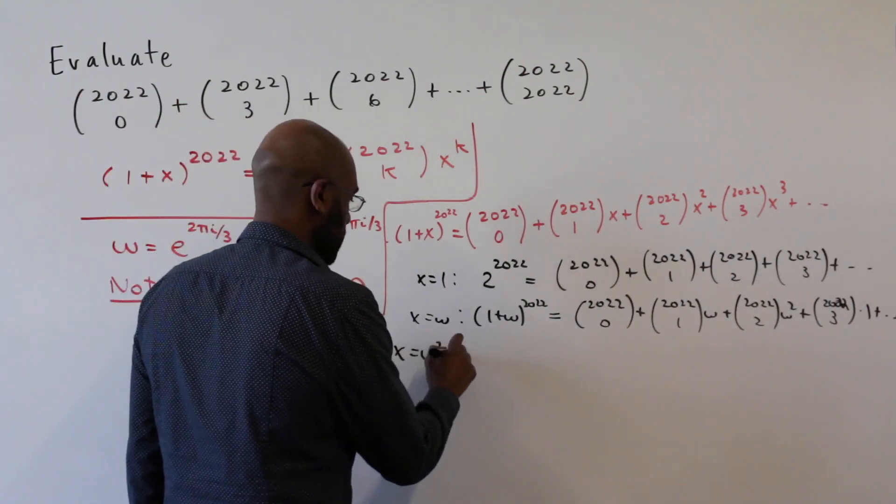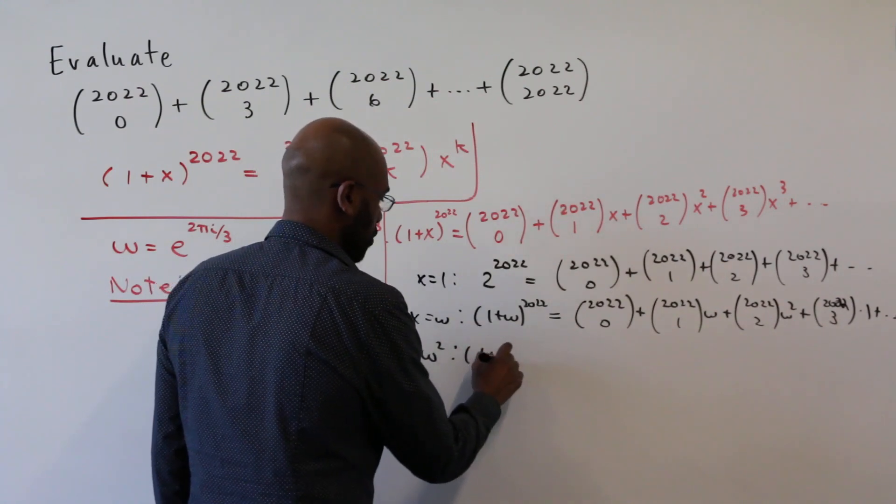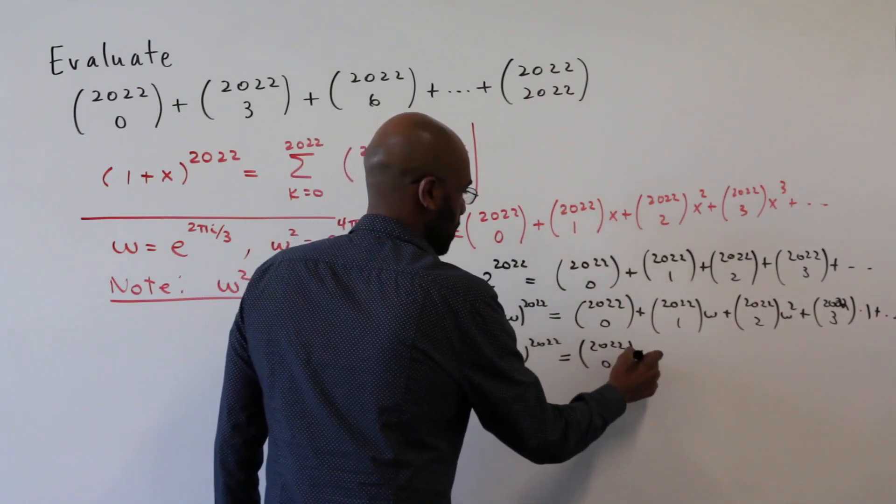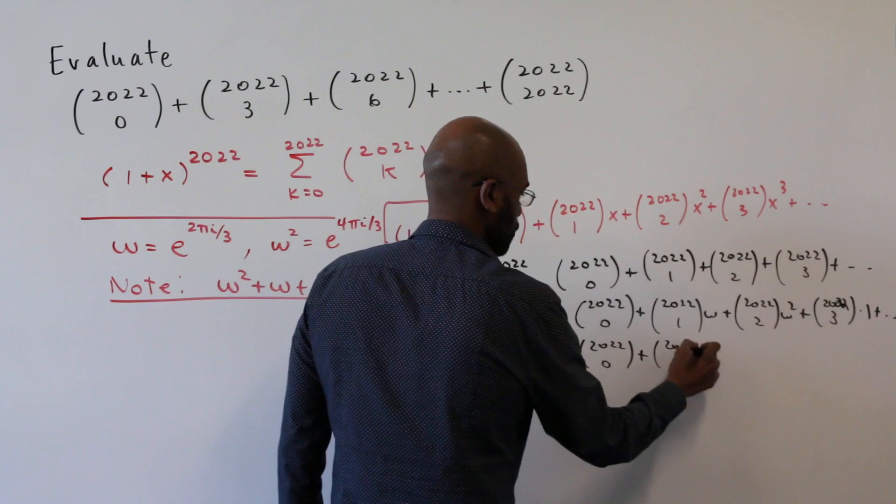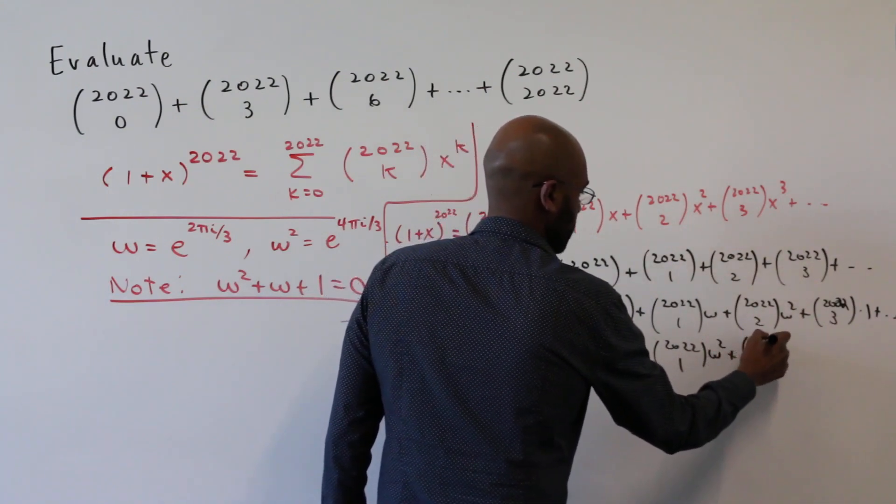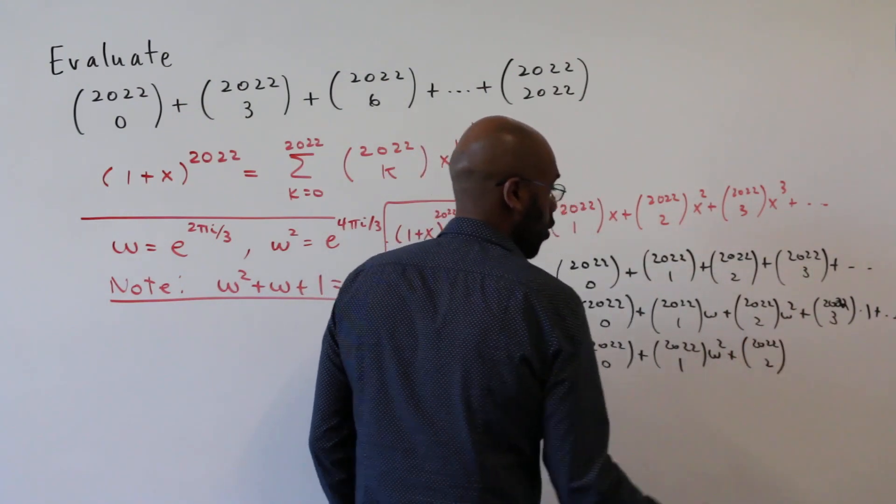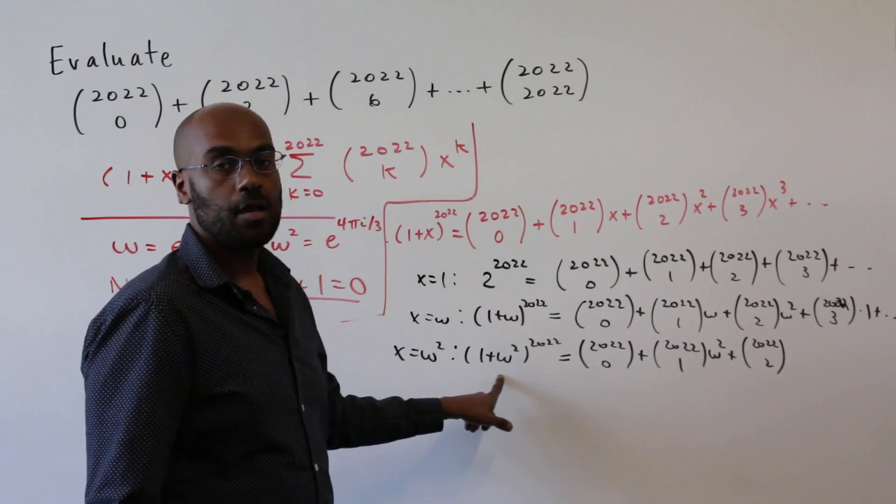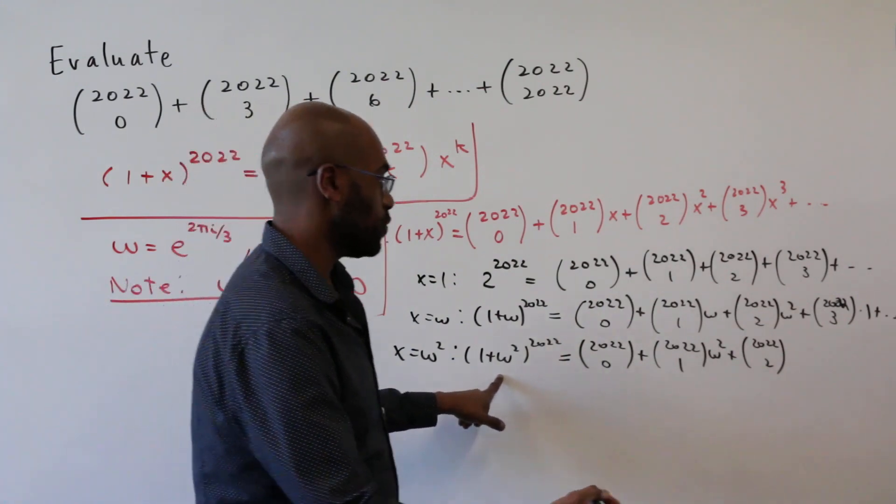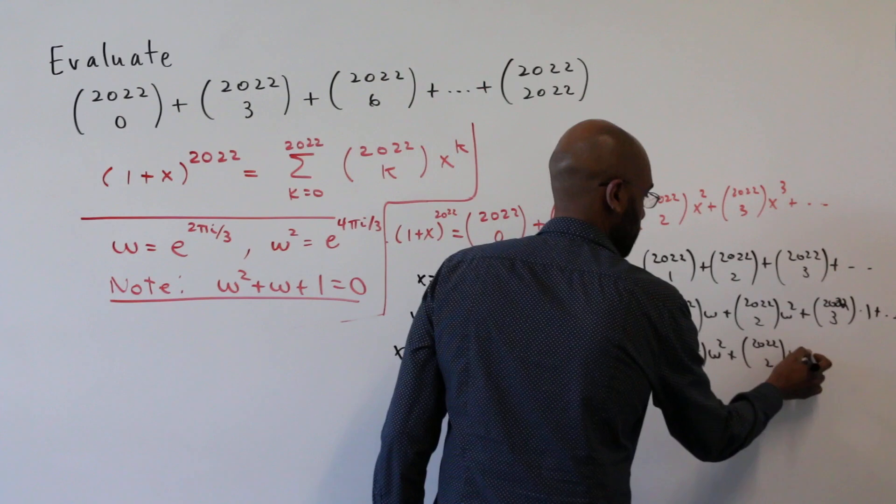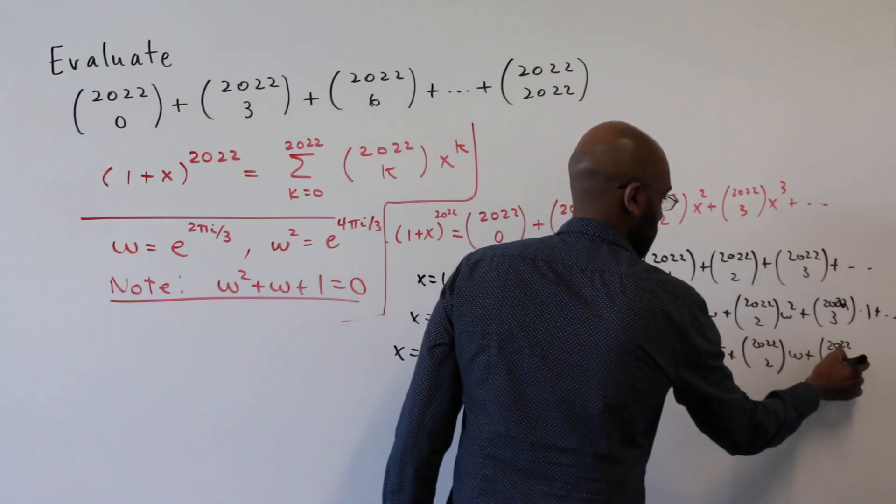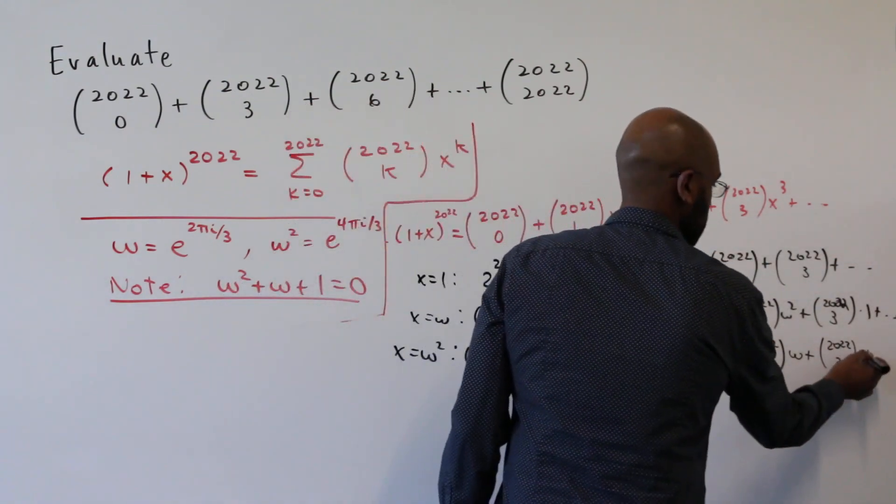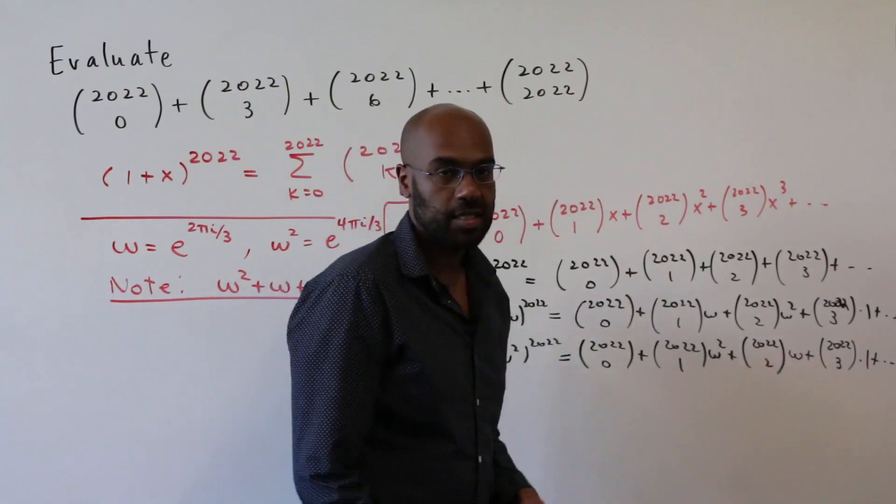Okay, now if we plug in x equals omega squared, we'll get one plus omega squared to the 2022 is 2022 choose zero plus 2022 choose one omega squared plus 2022 choose two omega to the fourth, because it's the square of this value omega squared that we plugged in. But omega to the fourth is omega because omega cubed is one. So this is omega plus 2022 choose three omega squared cubed, which is one plus, and we'll get a cycling of this thing again.